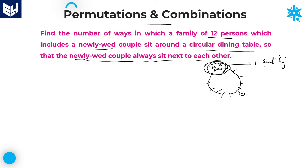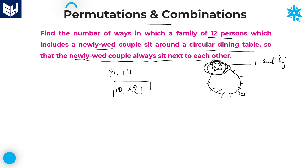Now these two members are a single entity. Still 10 members are there — 10 plus 1 single entity equals 11 members. 11 members can be arranged in a circular manner in (11 minus 1) factorial, that is 10 factorial ways. As we know, when arranging persons in a circular manner, the number of ways is (n minus 1) factorial. Within the single entity, A and B can interchange their positions, so those two members can be arranged in 2 factorial ways. Therefore our required answer is 10 factorial into 2 factorial.